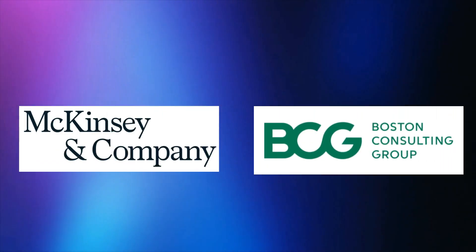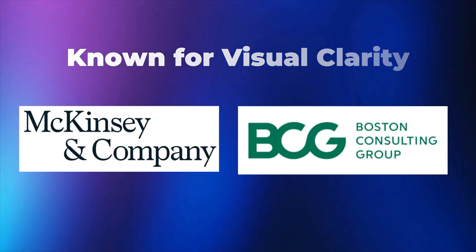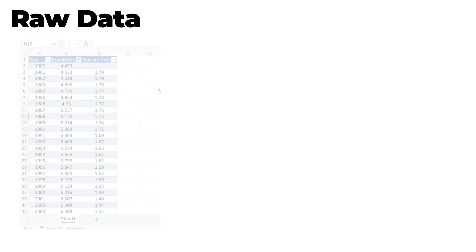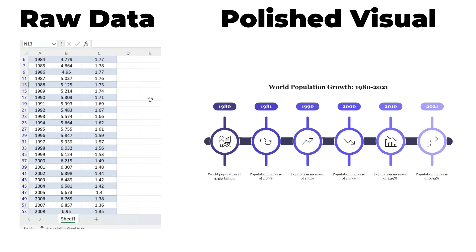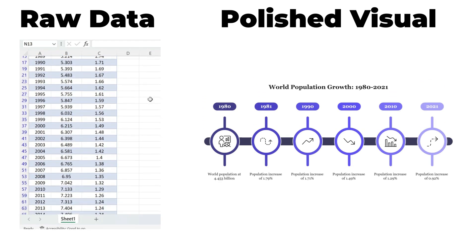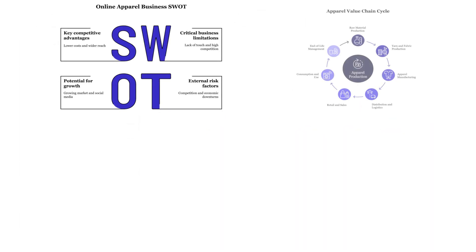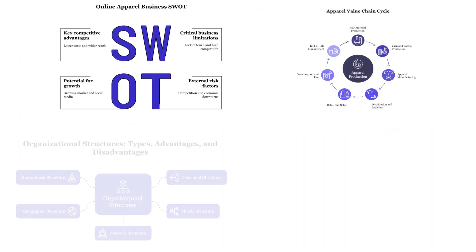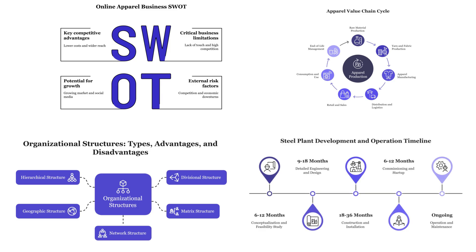Fourth, the Consultant's Slide Deck. Consulting companies like McKinsey and BCG are known for their visual clarity. Napkin AI bridges the gap between raw analysis in a spreadsheet and a polished, client-facing slide. It is ideal for rapidly generating visuals for SWOT analysis, value chain diagrams, organizational charts, or project timelines — saving hours of manual work in PowerPoint.